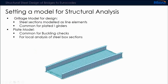Then we'll go straight into the design checks covering material properties, ULS checks, fatigue strength, connection design, and finally serviceability checks. The first thing is to set up the model for structural analysis so we have the right set of elements and loads to get the results on which we are going to perform the checks. There are two ways to model a structural steel bridge: a grillage model or a plate model.